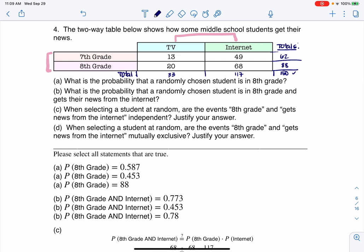So what is the probability that a randomly chosen student is an eighth grader? I want the eighth graders - I can see there are 88 of them out of 150. So the probability that somebody was in eighth grade would be 88 out of 150, and if I crunch that number on my calculator I get 0.587. Let's see the multiple choice - there it is.